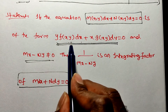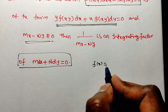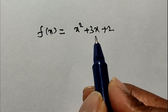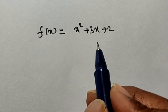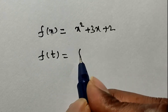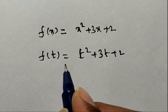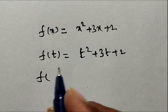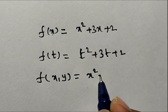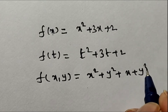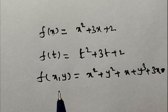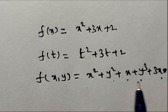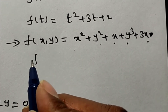Now you have to understand what is f(xy). For example, f(x) is a polynomial like x² + 3x + 2 — a polynomial function of degree 2 in terms of x, a single-variable function. If I replace x with t, then it becomes t² + 3t + 2. Now f(x, y) means something like x² + y² + x + y³ + 3x — a function in terms of two variables x and y.